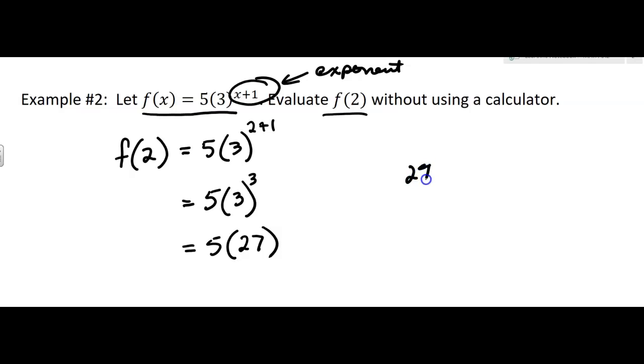And I have to do that by hand because it said not to use a calculator. Sad that I'm writing this out. Okay, I'm getting 135, just a review of multiplying. So when we evaluate that function at 2, we're getting 135.